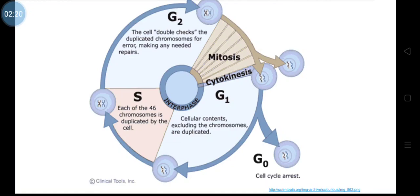In G1 phase, the cellular contents will increase — like cytoplasm and other cellular contents — excluding the chromosomes, which remain as they are. After G1 phase comes S phase, where each of the 46 chromosomes is duplicated by the DNA replication process. S means synthesis phase — synthesis of DNA.